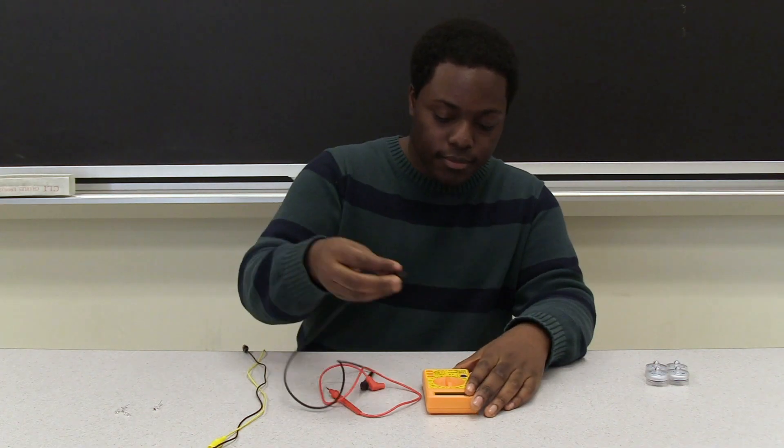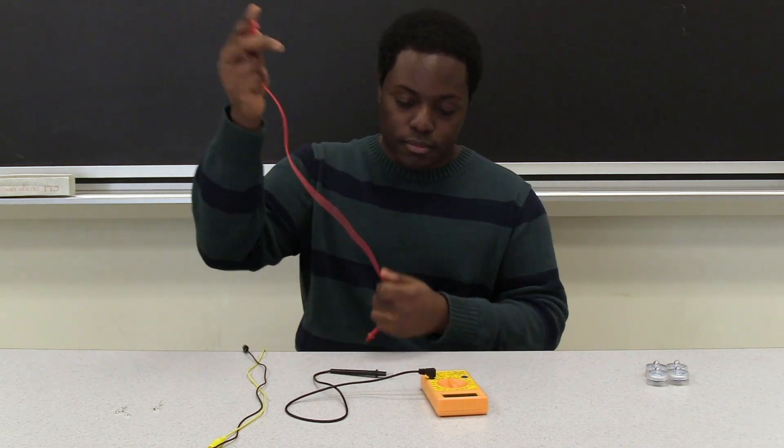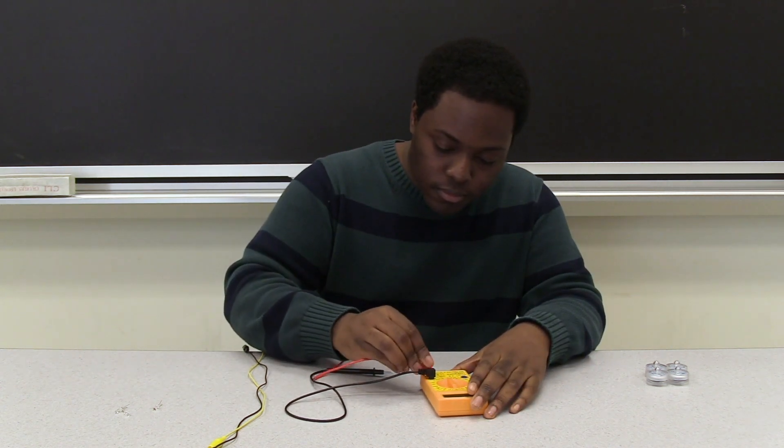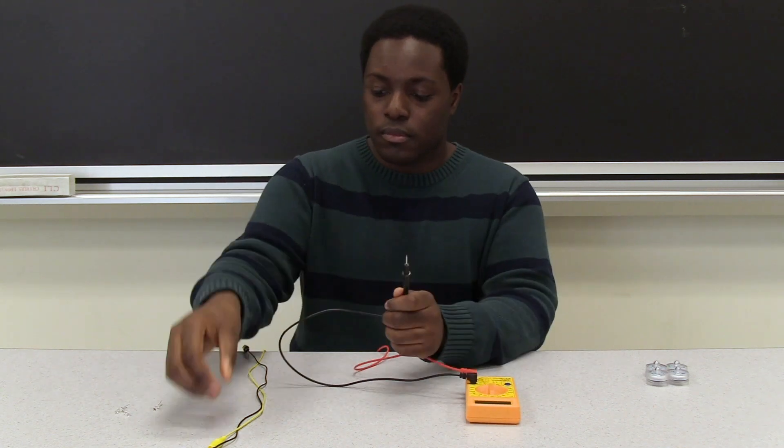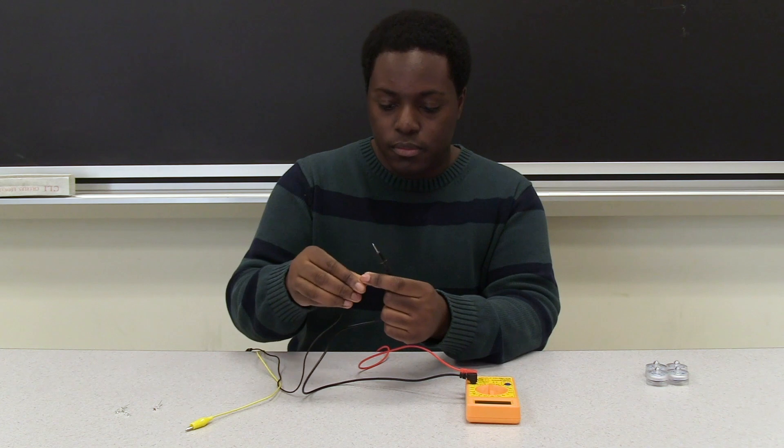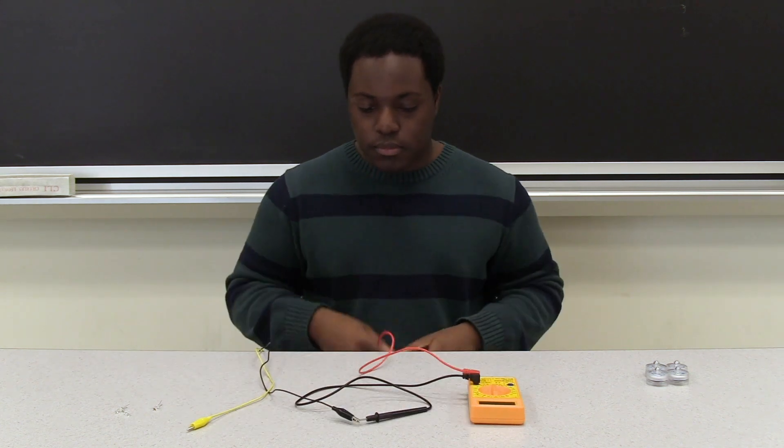First, connect your black or negative lead to the 10-amp port on the multimeter, and then your red or positive lead to the voltage ohm milliamp port. Then connect the probe end of each respective lead to one end of an alligator clip. After you do this, you should still have two free ends of the alligator clips.